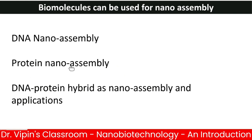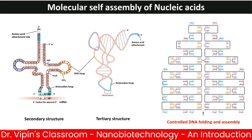Biomolecules that can be used for nano assembly include DNA nano assembly, protein nano assembly, and DNA-protein hybrid nano assembly. Most commonly, transfer RNA is functional only in its secondary and tertiary structure — a single-stranded RNA molecule that folds over itself in regions of complementarity.